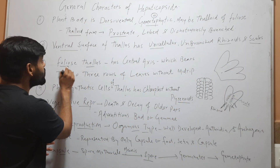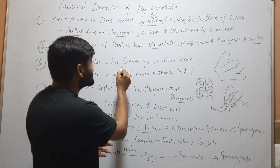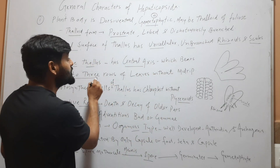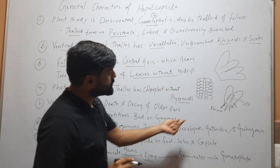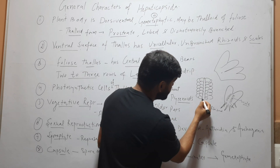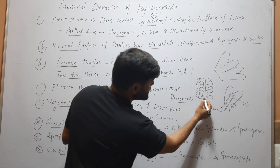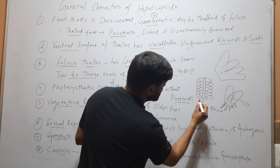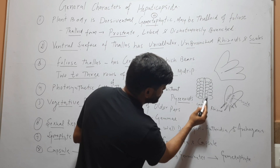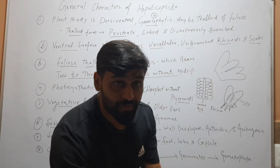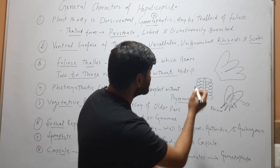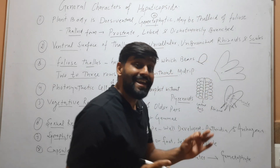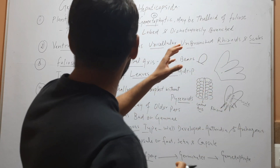If the body is foliose, it has a central axis which bears two to three rows of leaves, and the leaves are without a midrib. Here you can see a foliose thallus — the middle structure is the central axis, and the central axis bears two rows of leaves. The rows may be two to three, and each leaf is like this. The leaf does not have any midrib, so the leaf is without a midrib.